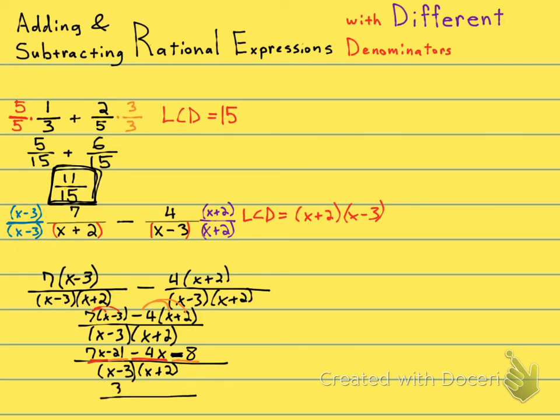7x minus 4x is 3x. Minus 21 minus 8 is minus 29, all over my common denominator. And now it's like simplifying a rational expression. Can I factor anything out of the numerator? Nope. 29 is prime.